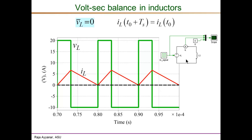We are applying a switching voltage waveform to this inductor and monitoring the current through it. This is a switching waveform with a period of exactly 10 microseconds (Ts = 10 µs). A positive pulse is applied during the T-on interval, where the duty cycle d equals one-third — so for one-third of Ts, we apply a positive 20 volts.